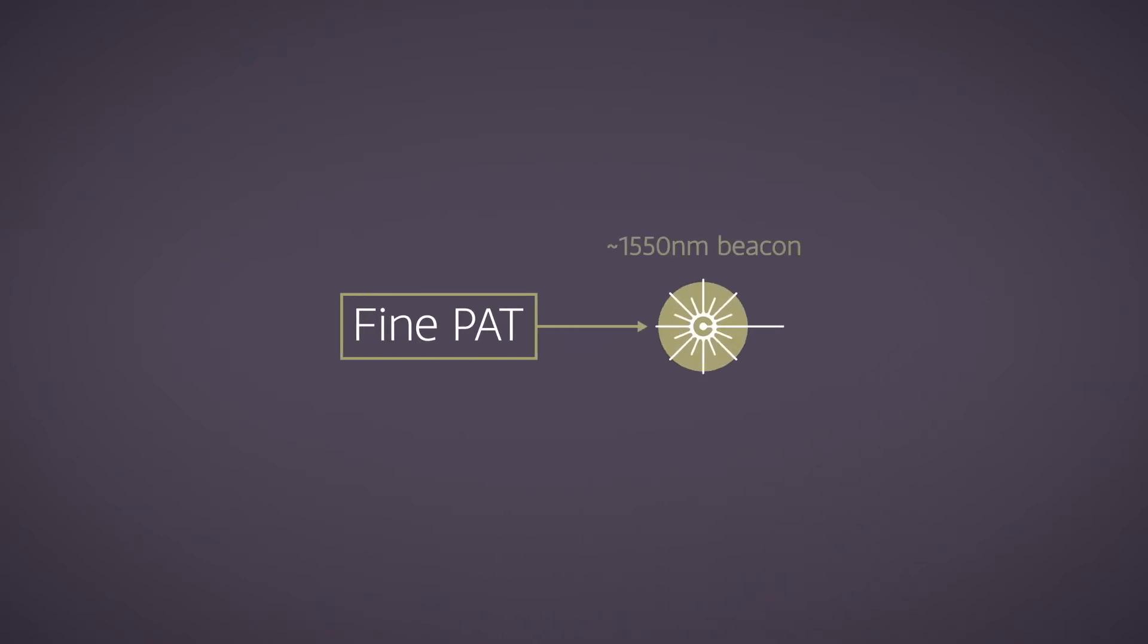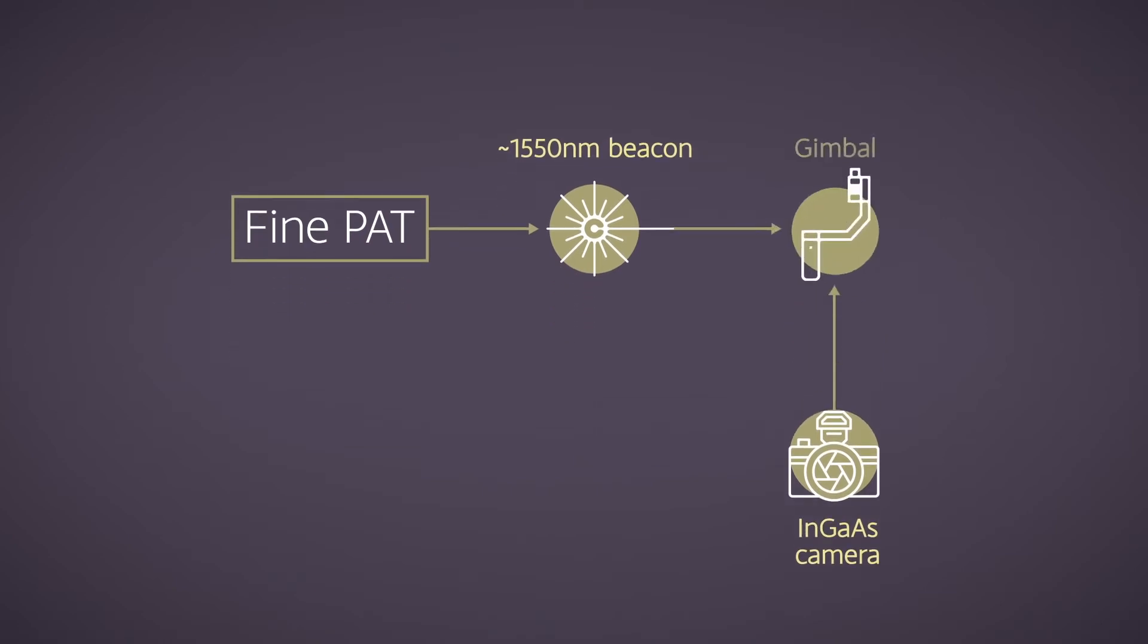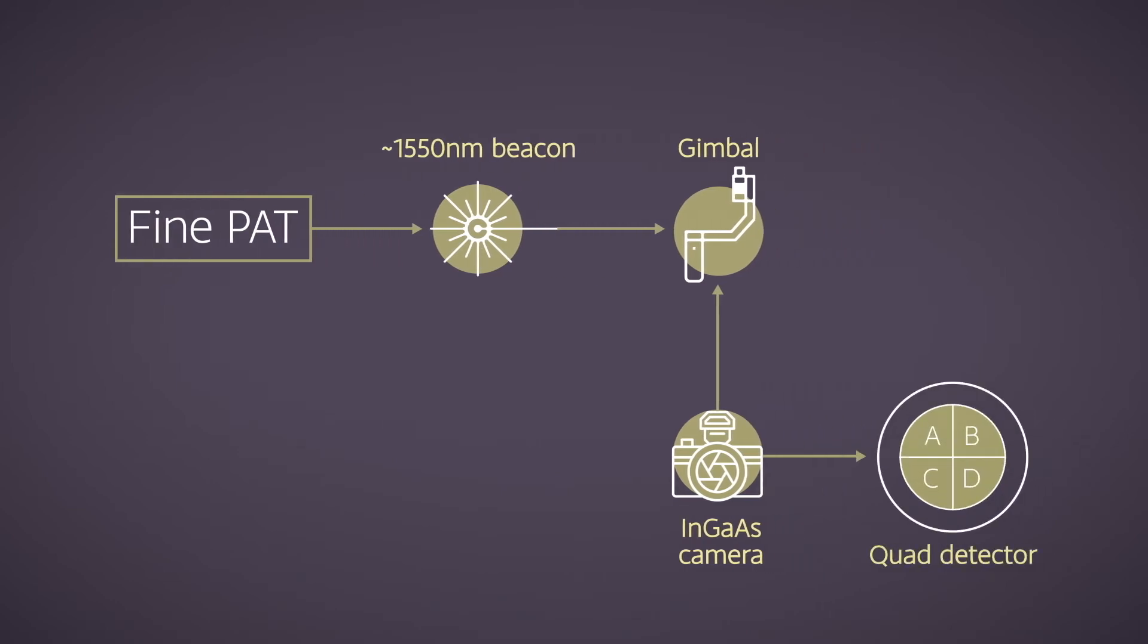The fine PAT subsystem includes an optical beacon, an indium gallium arsenide camera mounted on a gimbal, spatial light modulator, photo detector and quadrant detector able to feed back the steering information to the gimbal controller and the fast steering mirror. The feedback loop compensates for vibrations and other movements.